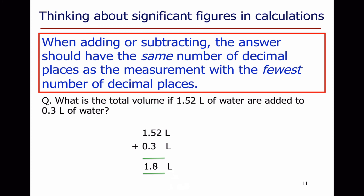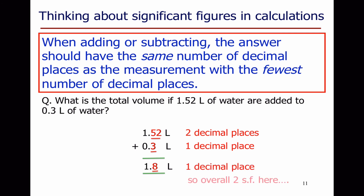When adding or subtracting, the rule is different: the answer should have the same number of decimal places as the measurement with the fewest decimal places. For example, what is the total volume if 1.52 litres is added to 0.3 litres? The value 1.52 is written to two decimal places, but 0.3 is only one decimal place — so we have no knowledge of that second decimal place. The answer is therefore written to one decimal place: 1.8 litres. Note that this is two significant figures, because both the 1 and the 8 are significant.